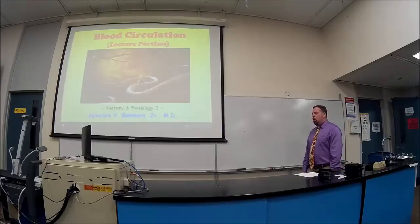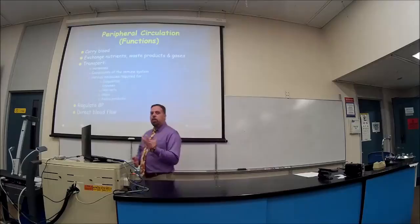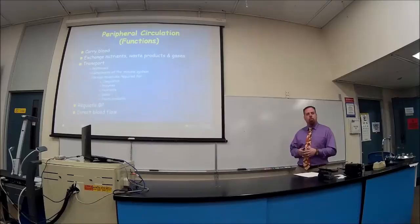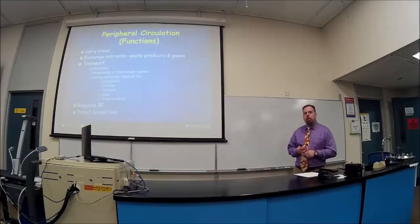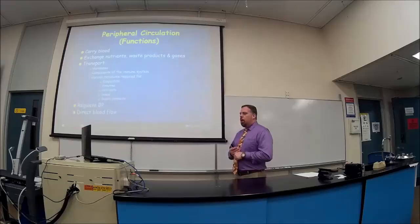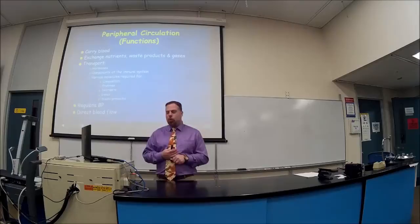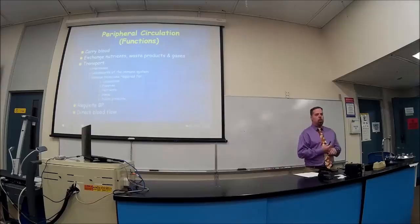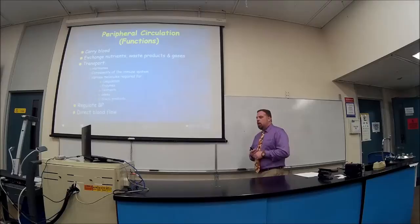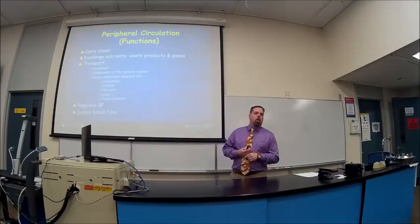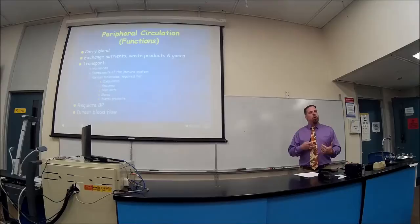So the lecture portion — peripheral circulation. We already covered the central circulation, which is the heart and lungs, and blood flow through the heart, pulmonary arteries and veins. Now what about throughout the rest of the body? It's going to carry blood, exchange nutrients between blood and cells, transport hormones, and transport molecules that help with clotting factors and waste products. It's also going to help regulate blood pressure and direct blood flow — for example, when you're running a marathon, blood gets shunted away from your intestines to your skeletal muscles.